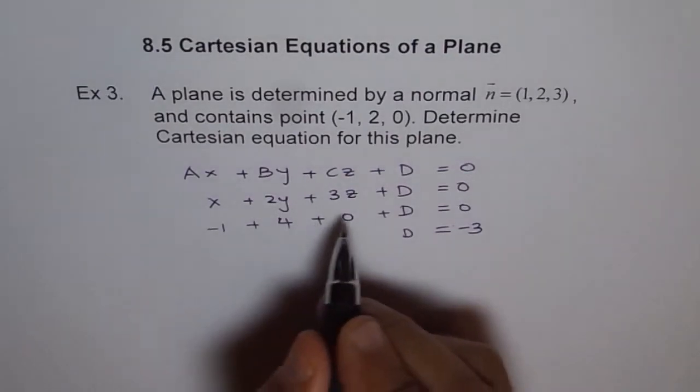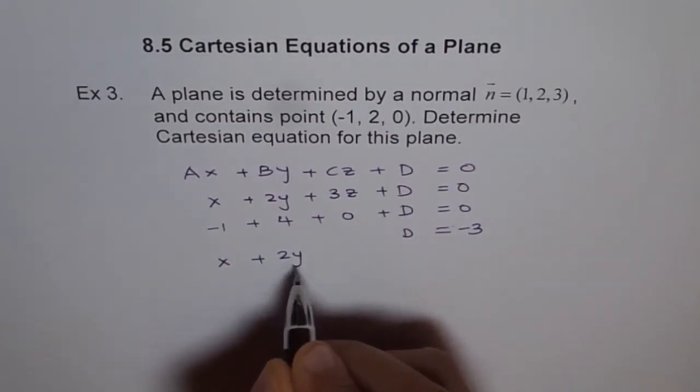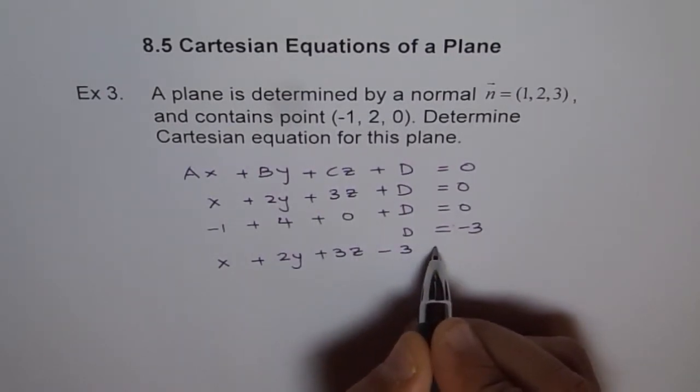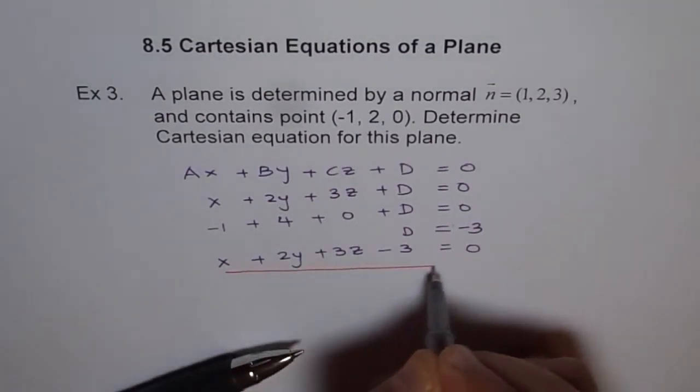If D is -3, so the equation becomes x plus 2y plus 3z minus 3 equals 0. So that is the vector equation which we are looking for.